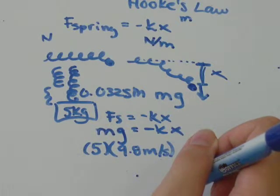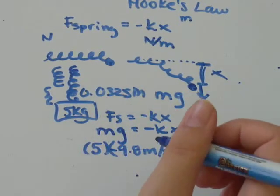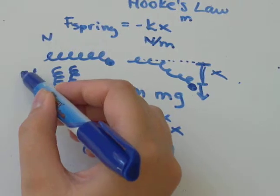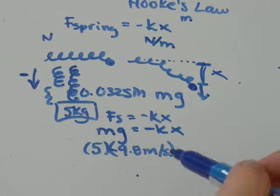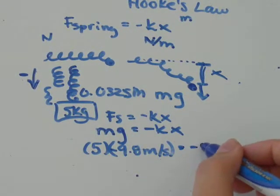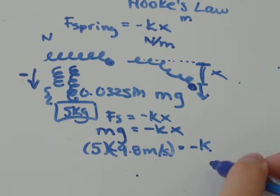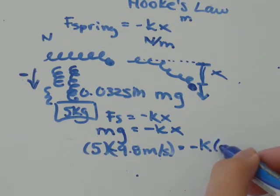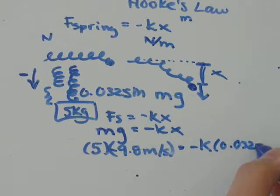And we're going to say that that's negative 9.8 meters per second. We're going to say this direction is negative. And that equals negative k, which is what we were asked to solve for, times 0.0325, the displacement.